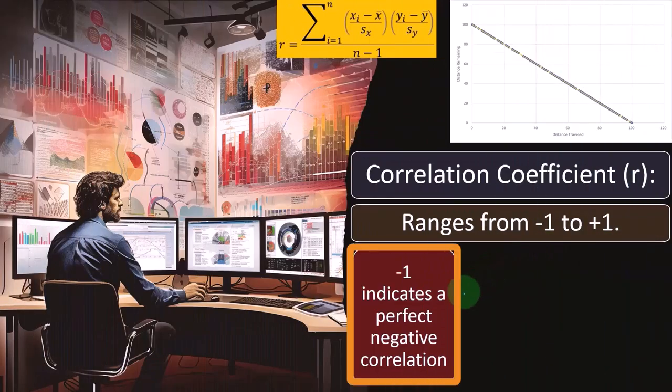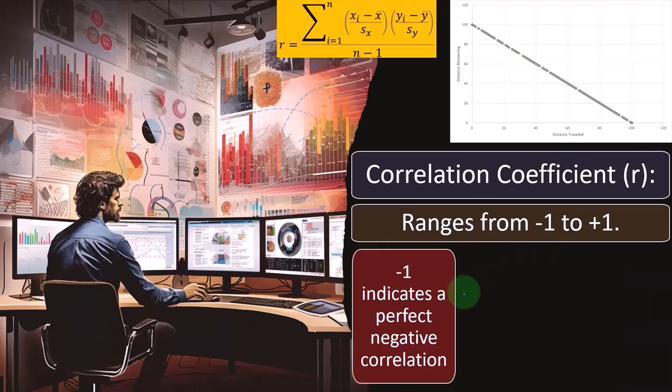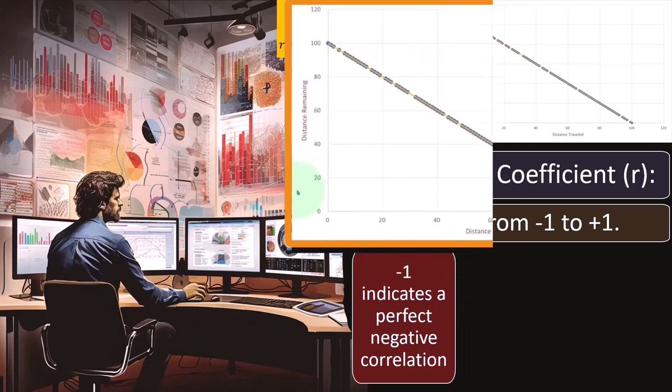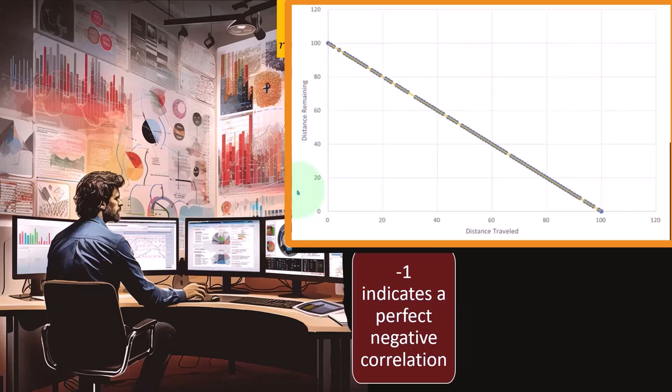If it was exactly negative one, which isn't likely to happen most of the time, but if it was in that extreme example it indicates a perfect negative correlation. We'll do an example of this just to show the extreme.